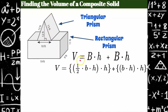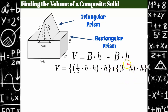We need to recognize that the triangular prism has an area of the base equal to the area of a triangle times the height of the prism, and the rectangular prism has an area of the base which is base times height, multiplied by the height of the prism.